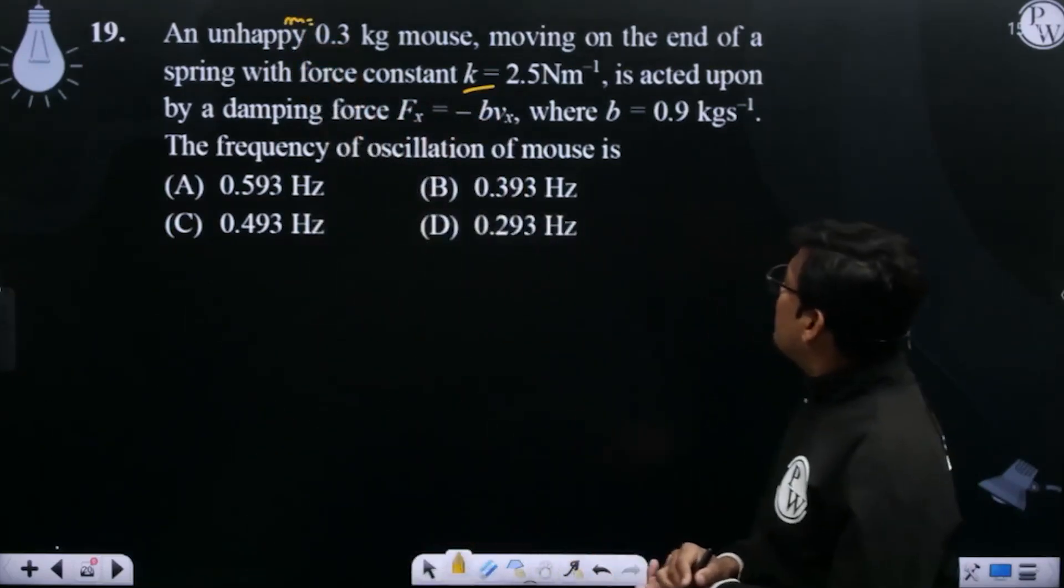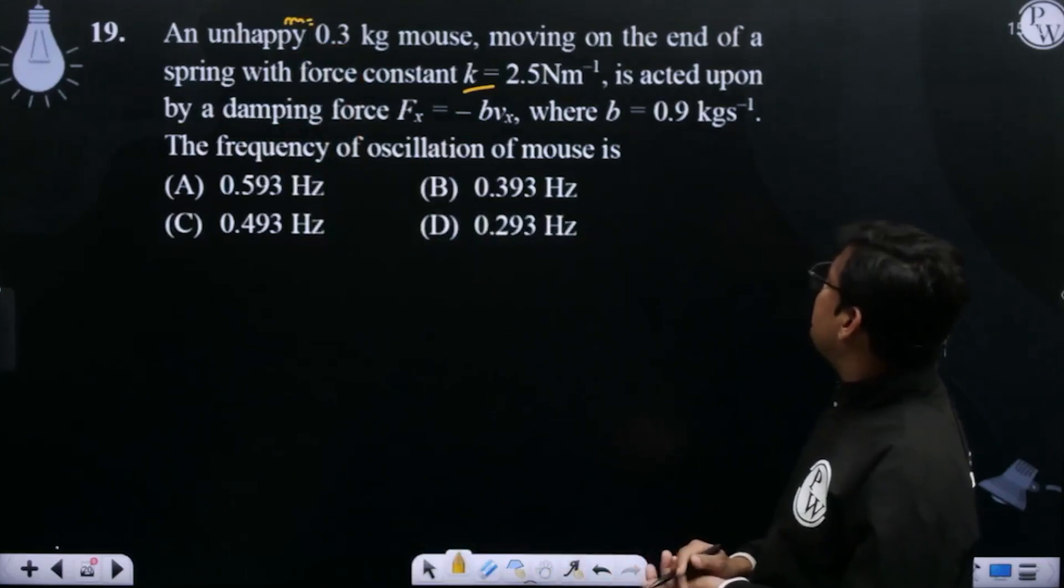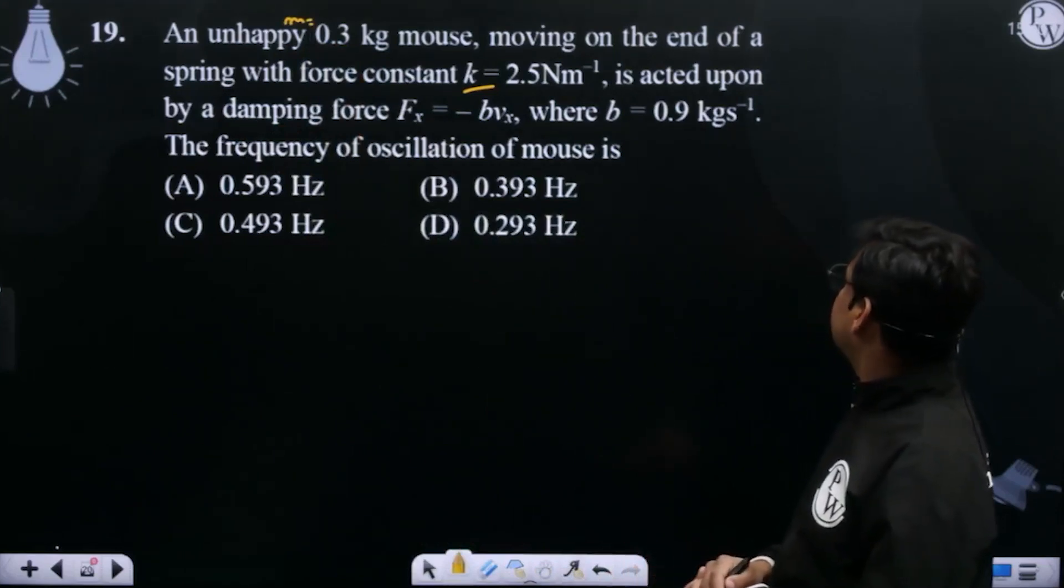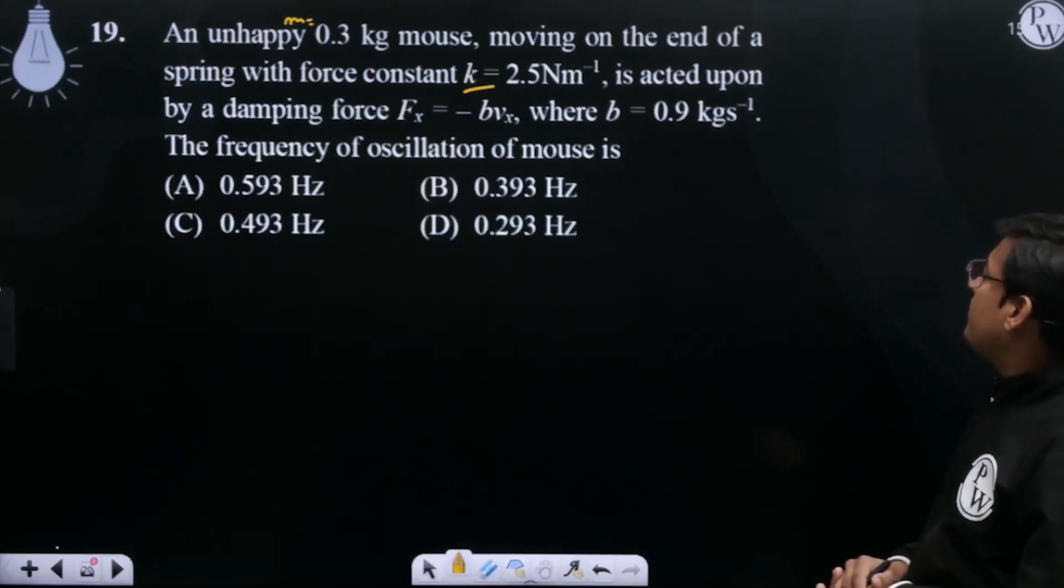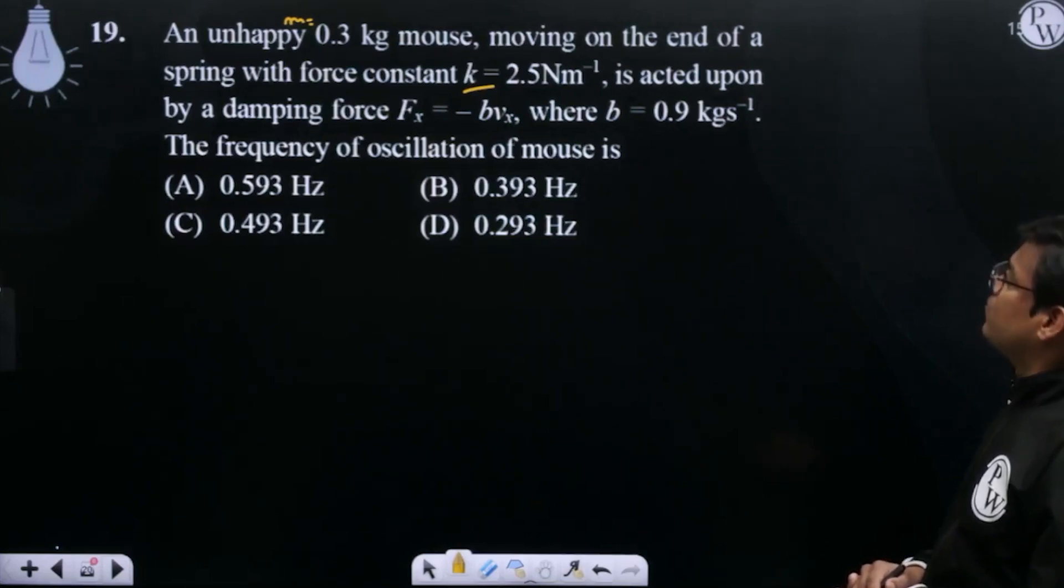Acted upon by damping force Fx equals minus Bvx where B equals 0.9. The frequency of oscillation of the mouse is what we need to find.